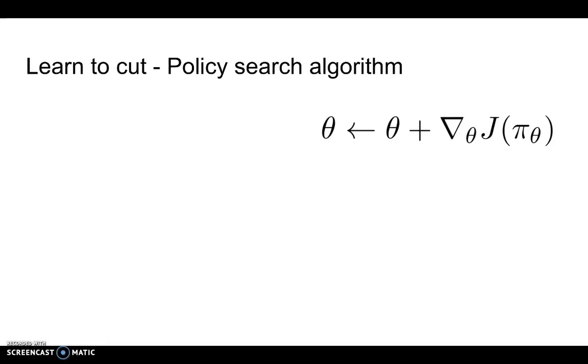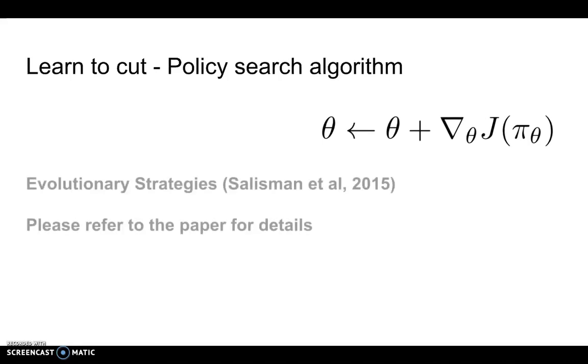Remember that in order to carry out the gradient update, we have to estimate the gradient of the objective function with respect to parameter theta, which in this case are neural networks. For our paper, we will consider using evolutionary strategy, a zero-order optimization technique. Please refer to the paper for more details.